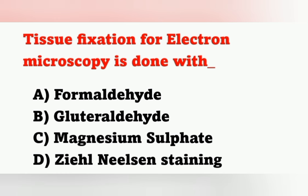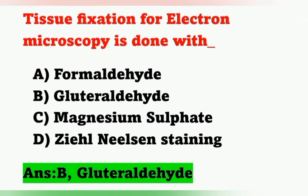The next question: tissue fixation for electron microscopy is done with which agent? Options: Option A, formaldehyde; Option B, glutaraldehyde; Option C, magnesium sulfate; Option D, Ziehl-Neelsen staining. Tissue fixation for electron microscopy is done with the help of glutaraldehyde. Option B is the correct answer.